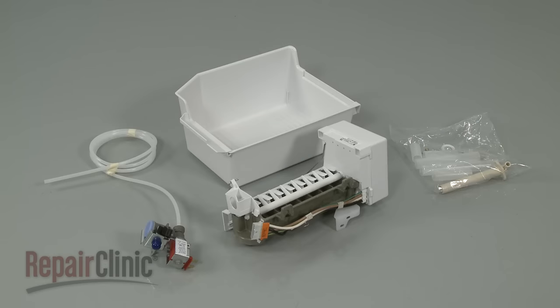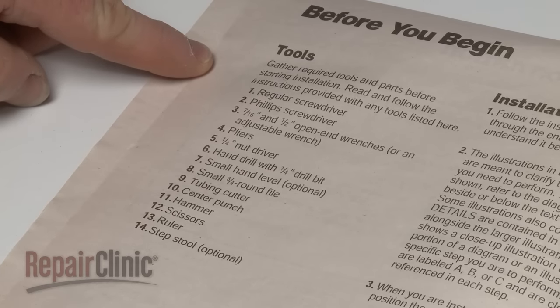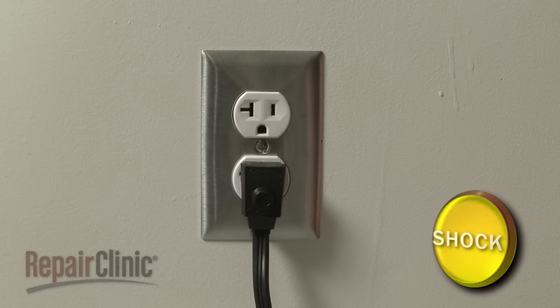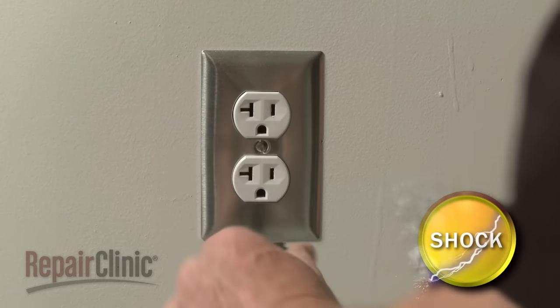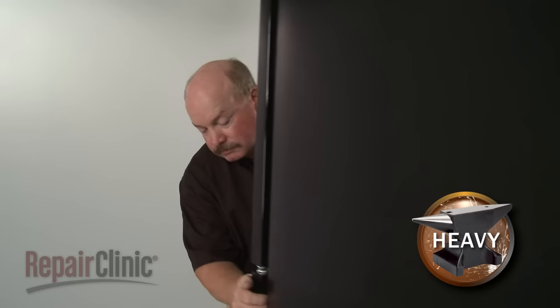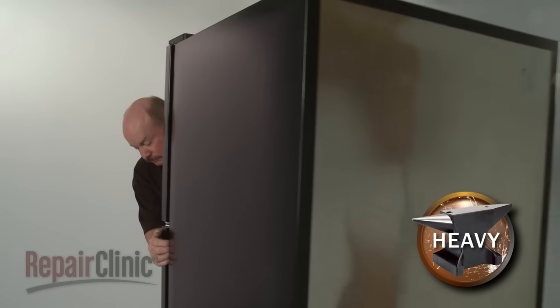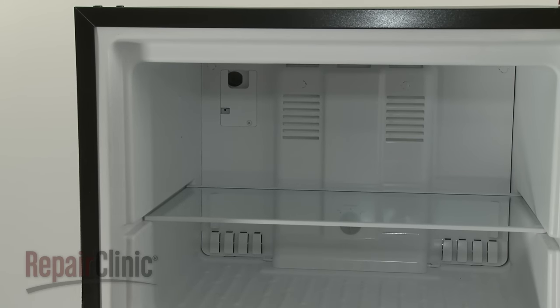Before you begin the ice maker installation, refer to the installation manual for a list of recommended tools and parts you may need. Unplug the refrigerator power cord from the electrical outlet or disconnect the power. Carefully pull the refrigerator away from the wall or cabinet space so you can easily access the rear panel. All food items should be removed from the freezer compartment or from the area where the ice maker will be installed.